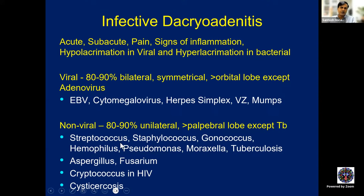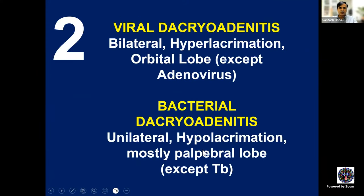Common etiologies for bacterial dacryoadenitis include Streptococcus, Staphylococcus, Gonococcus, Haemophilus influenzae, Pseudomonas, Moraxella, Tuberculosis, and fungal organisms such as Aspergillus and Fusarium, as well as Cysticercosis. Take-home points: viral dacryoadenitis — bilateral, hyperlacrimation, orbital lobe except adenovirus. Bacterial dacryoadenitis — typically unilateral, hypolacrimation, mostly palpebral lobe.